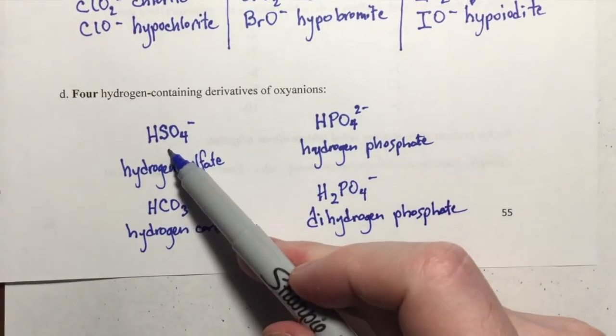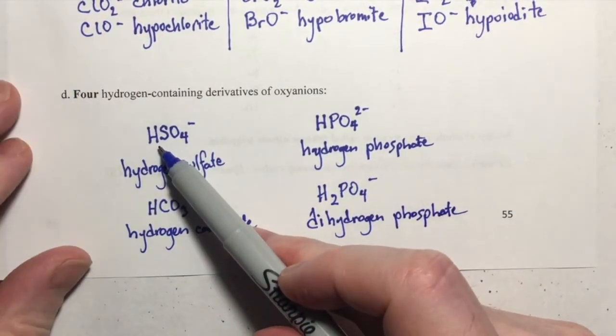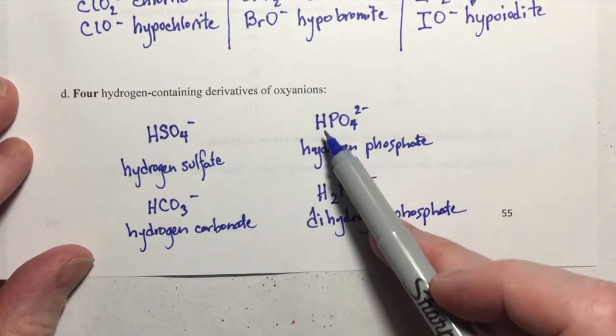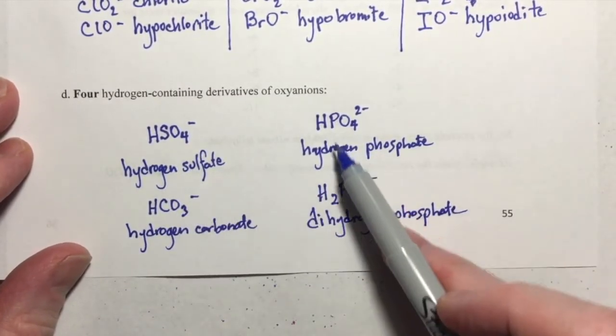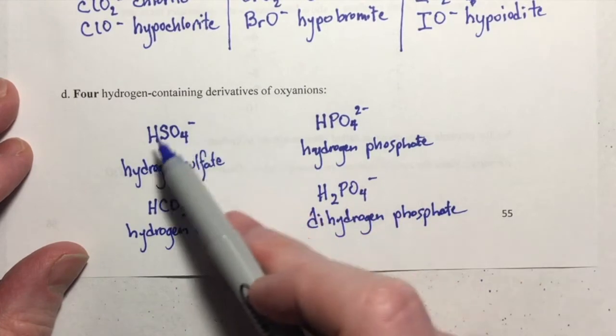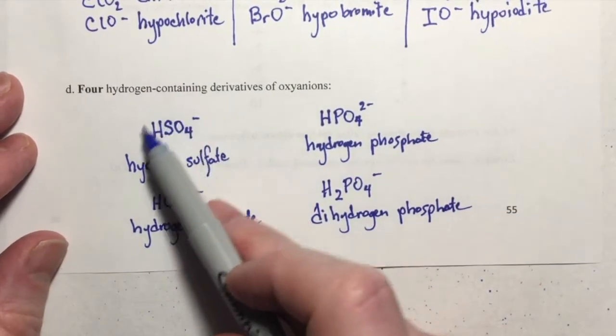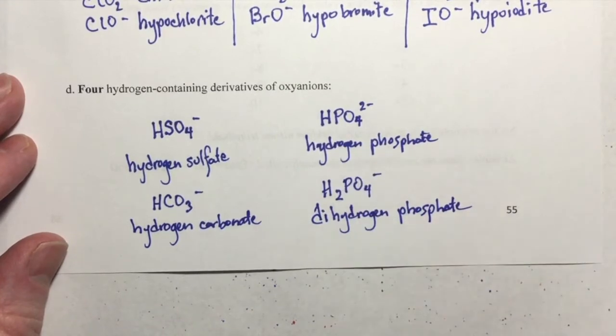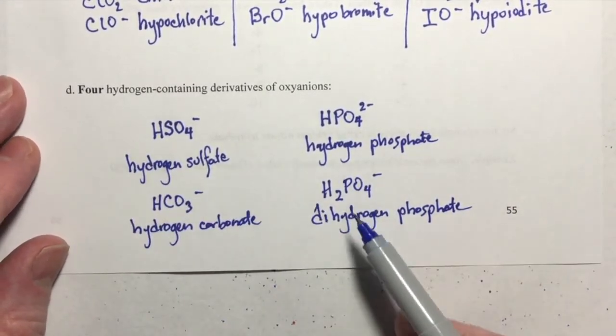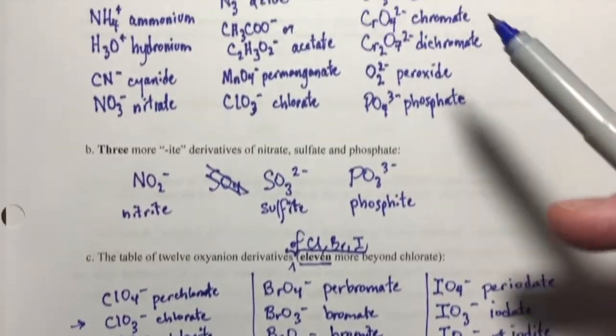So notice again that these sometimes are mistaken for acids because they have hydrogens in them. But these are not acids. These are polyatomic ions that happen to have hydrogen in the ion. And so with these four, that brings the total up to 34.